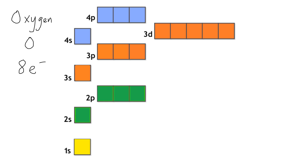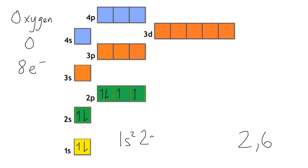It gets a bit more interesting when we get to oxygen. Oxygen has got eight electrons; its Bohr configuration would be 2 and then 6. So that's 1s2, 2s2, and that leaves us with four electrons to go in the 2p. We start by putting one electron in each box with the same spin, and only once we've put one electron in each box do we go back and start double filling. When we double fill each orbital, we give it the opposite spin. So its configuration is 1s2, 2s2, 2p4.